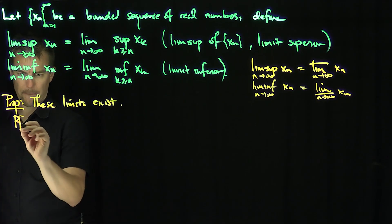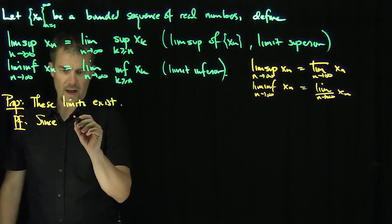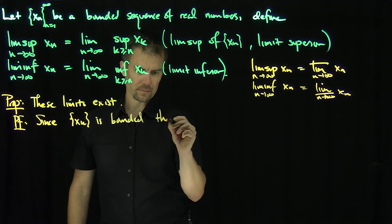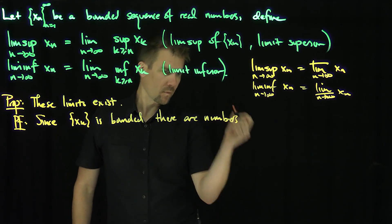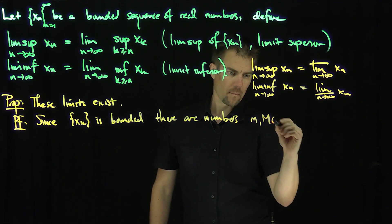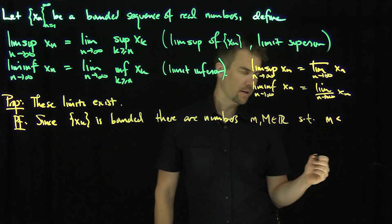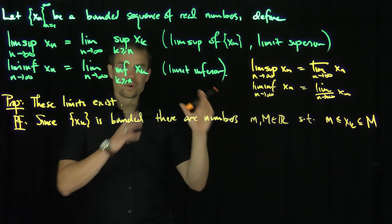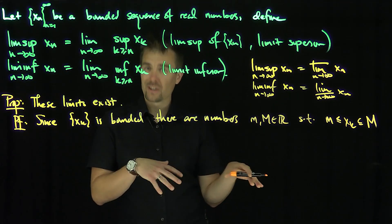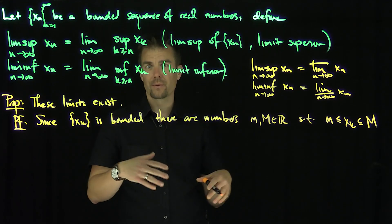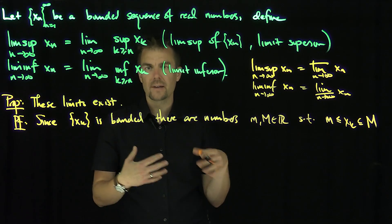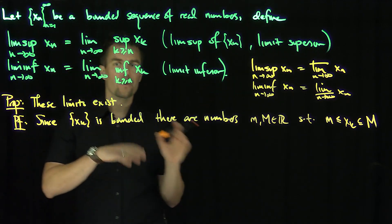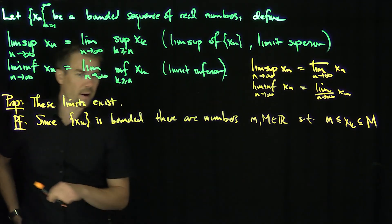Here's the proof. Since xk is bounded, there are numbers little m and big M such that m ≤ xk ≤ M. If we have infinity and negative infinity, all these arguments still work — there's just extra case work, such as when xn equals infinity, or negative infinity, or is unbounded from above or below. The bounded case is the most interesting one.